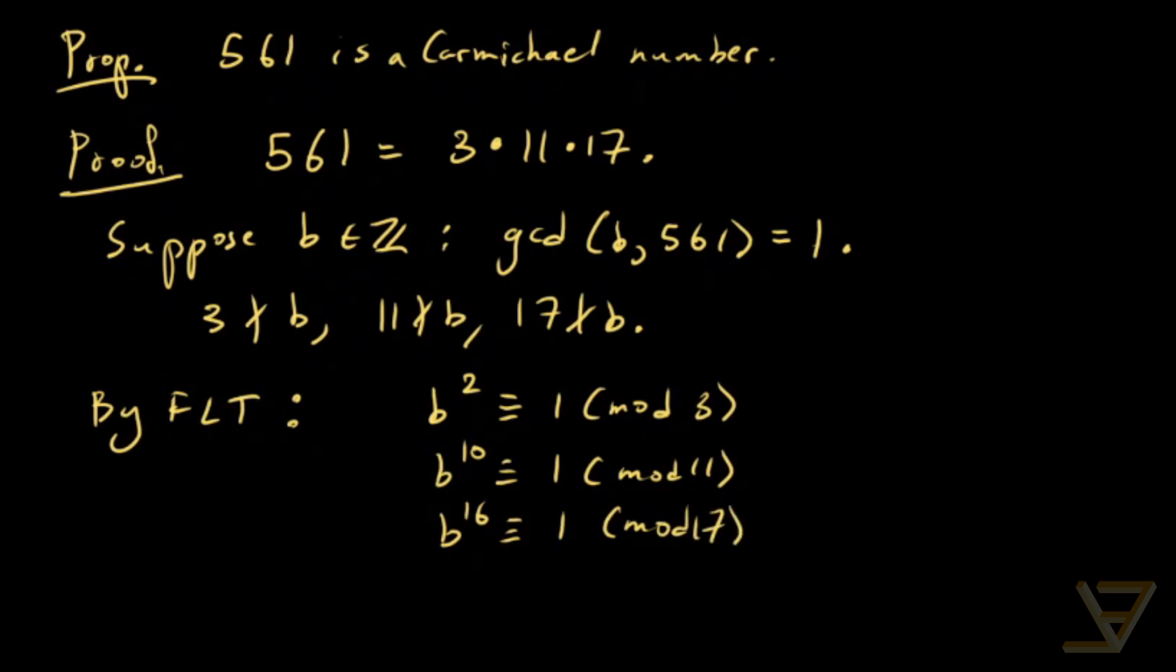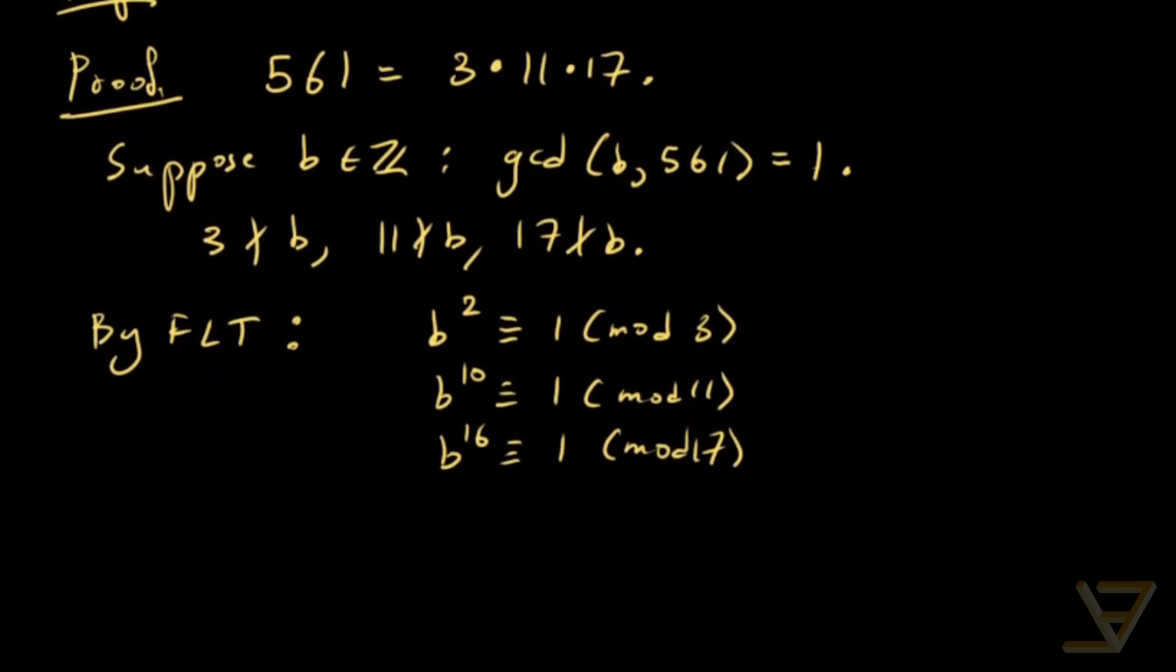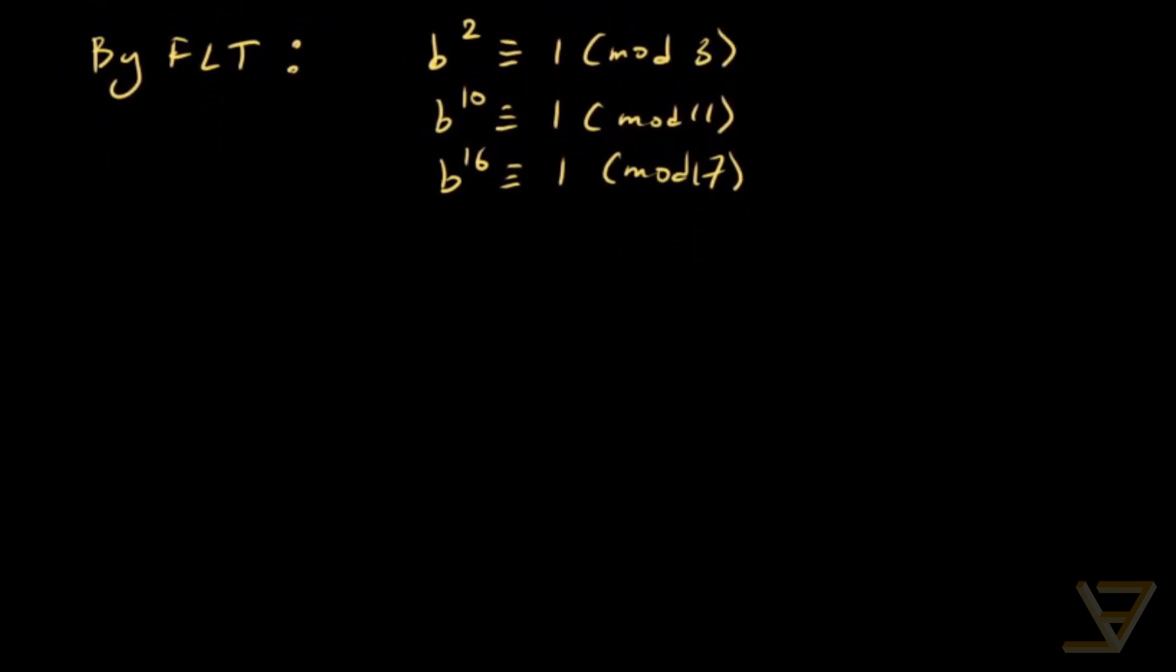Notice that 2 is 1 less than 3, 10 is 1 less than 11, and 16 is 1 less than 17. Now, the lowest common multiple of 2, 10, and 16 is equal to 80.